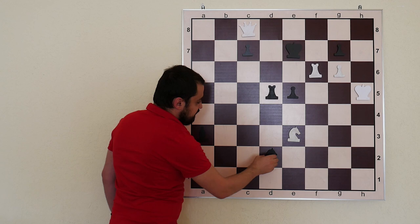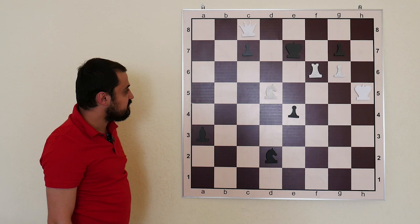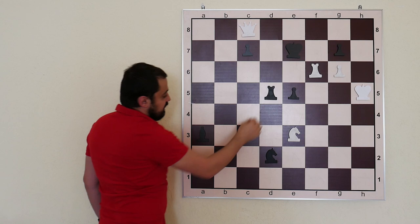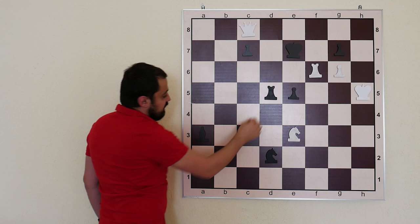Here if Black plays something like e4 check, we are giving another check with mate: Knight d5. And if any other moves like c6 to protect Knight d5, we are playing simply Rook e6 mate.